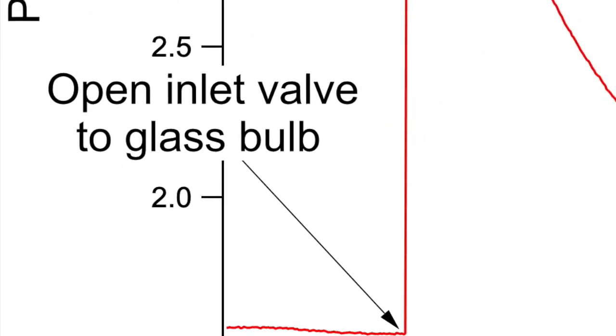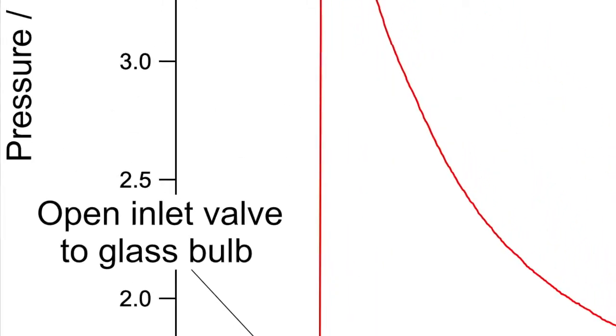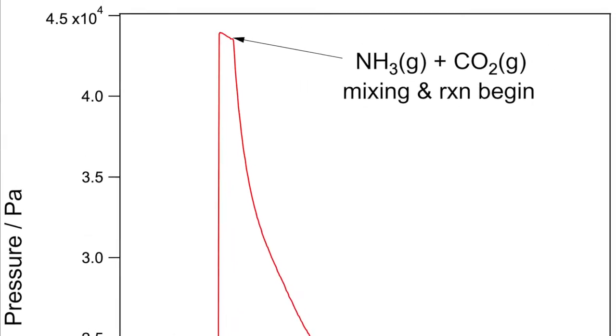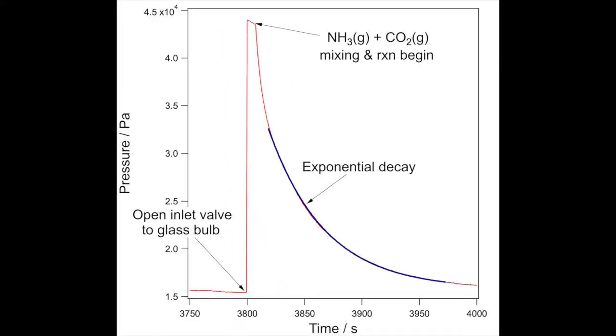The pressure jumps as we open and close the valve. The two gases begin to react as they mix. Once the gas phase is homogeneously mixed, the pressure follows an exponential decay.